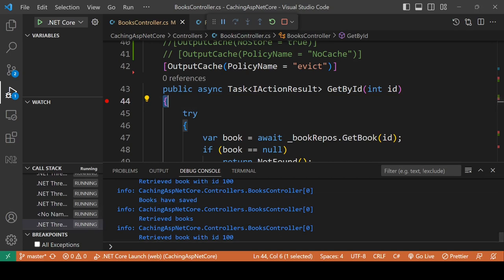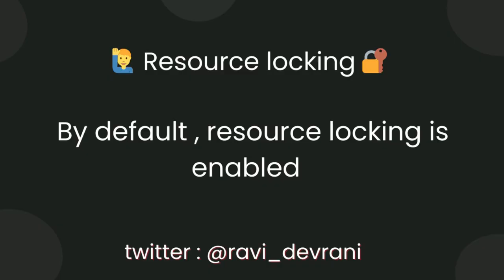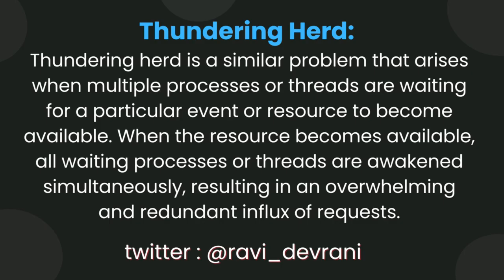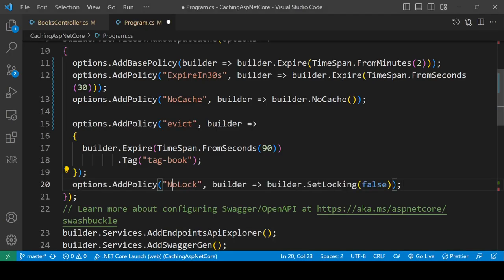Resource locking is enabled by default to prevent cache stampede and thundering herd problems. Cache stampede occurs when a cached value expires and multiple simultaneous requests try to regenerate it. Thundering herd is similar — it happens when multiple processes waiting for a resource are all awakened at once, causing an overwhelming influx of requests. To disable locking, call the SetLocking(false) method when creating a policy.